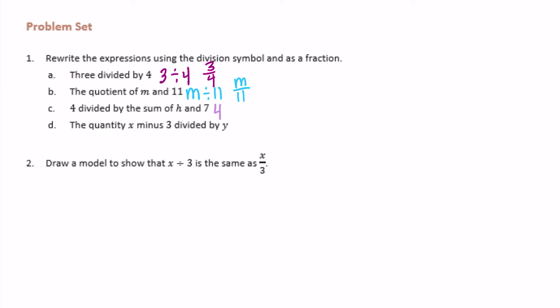4 divided by the sum of h and 7. So 4 divided by the sum, meaning we're going to add h and 7. h plus 7 and I'm putting them in parentheses because I want them to stay together. So if I put it in a different form it would be 4 over h plus 7. You don't necessarily need parentheses that way.